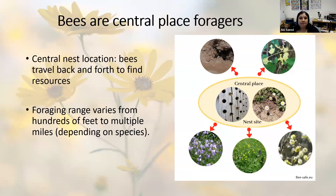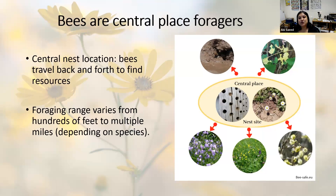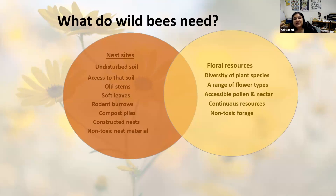Bees are what are called central place foragers, meaning they have one centralized nest location and travel a certain distance from that nest to find all the resources they need — nesting materials, pollen, nectar, and other materials. This distance can range from a couple hundred feet for smaller bee species to a few miles for larger species. For species that can only travel a couple hundred feet, their habitat needs to encompass everything they need within that small area. You want to ensure nesting sites and floral resources are in proximity to each other.